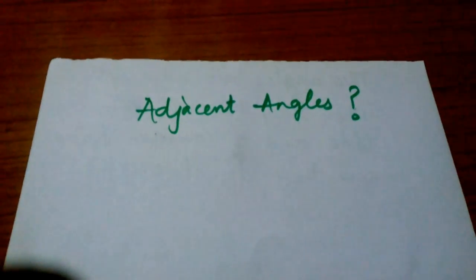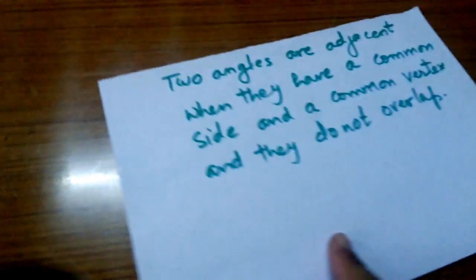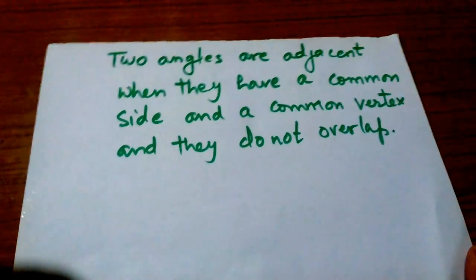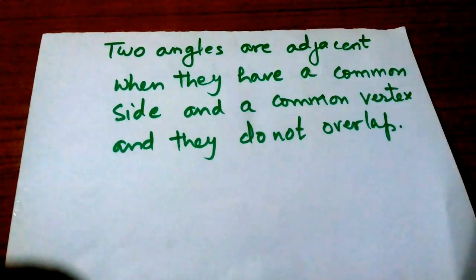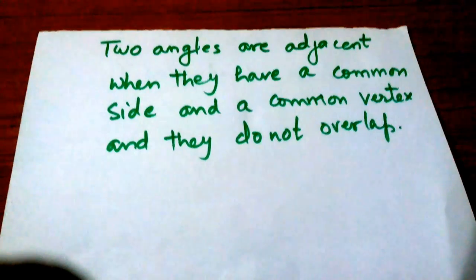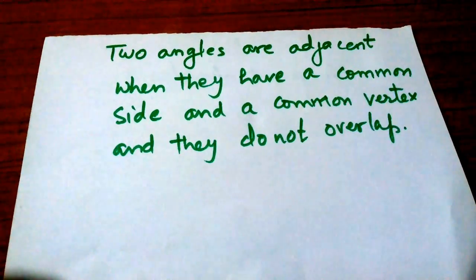What are adjacent angles? Two angles are adjacent when they have a common side and a common vertex and they do not overlap.